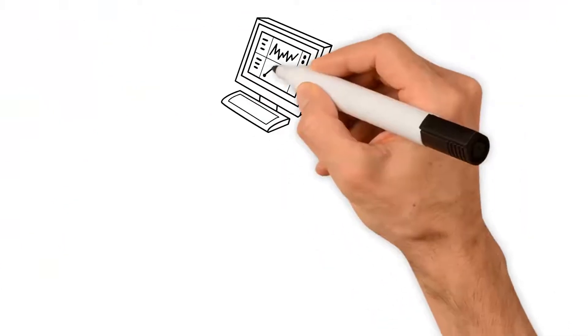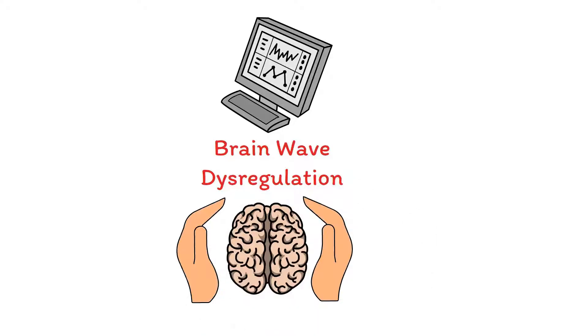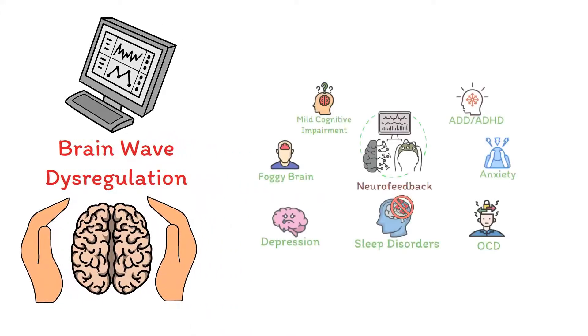It's important to note that brainwave dysregulation is present for every mental health condition, with each disorder having relatively predictable characteristics.